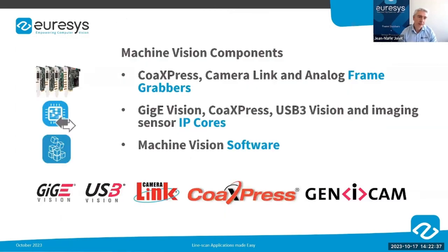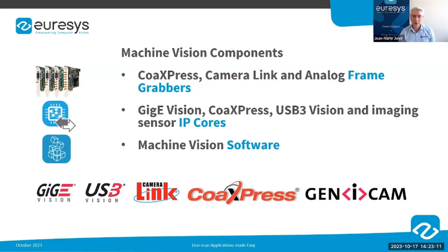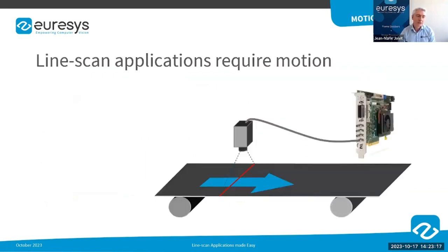At Euresys we offer three types of products. We are very well known for our frame grabbers, used in the vision industry for more than 30 years. In addition to frame grabbers, we also develop and produce IP cores for various interface standards and imaging sensors. We also provide a complete range of machine vision software libraries known as Open eVision, dedicated to the development of 2D, 3D, or deep learning-based applications.